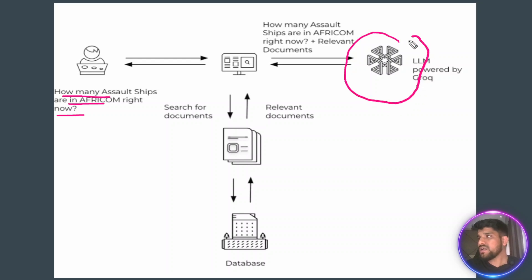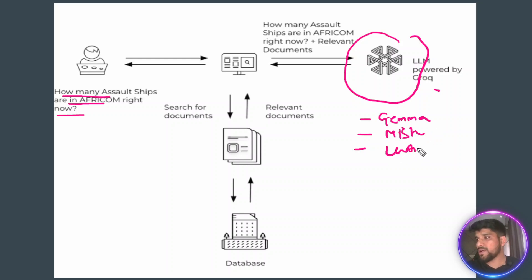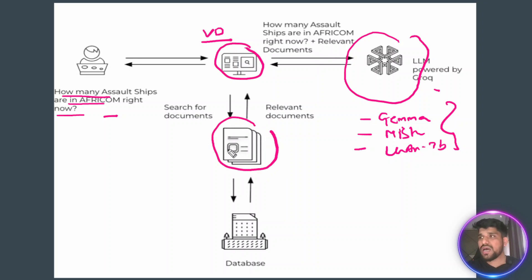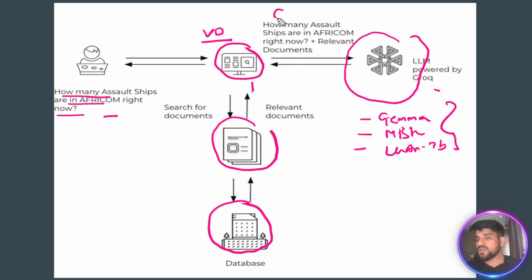These LLMs are hosted in the Groq platform. Currently Groq has provided three open source LLM models: one is Gemma, second is Mistral, and third is LLaMA 2 7B. You just need to use the model name and that LLM is available for your use. We are also going to use a VectorDB for vector search. When a user asks a question, the documents closest to the question are retrieved from the database and the related documents are passed to the vector search.